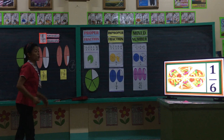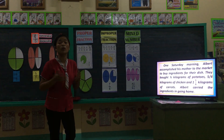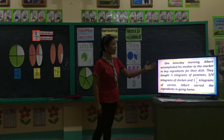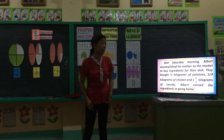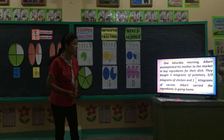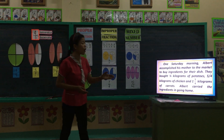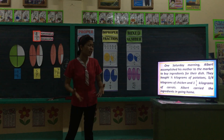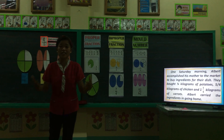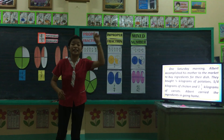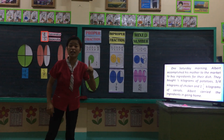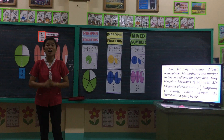Now, let's read the situation all together, and afterwards I will ask you a question. One Saturday morning, Albert accompanied his mother to the market to buy ingredients for their dish. They bought three-fourths kilograms of potatoes, five-fourths kilograms of chicken, and one and three-fourths kilograms of carrots. Albert carried the ingredients going home.